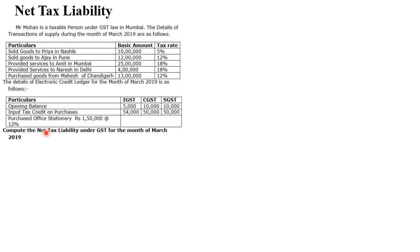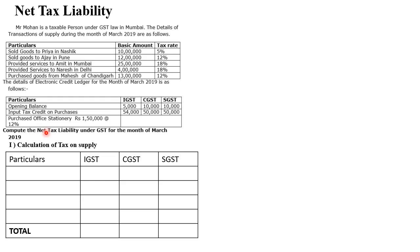Whenever this kind of sum is given where they ask you to find the net tax liability, your very first step is to calculate tax on supply — so anything you are selling or providing, we need to find out the tax. The format for calculation of tax on supply will have: Particulars, IGST, CGST, and SGST.